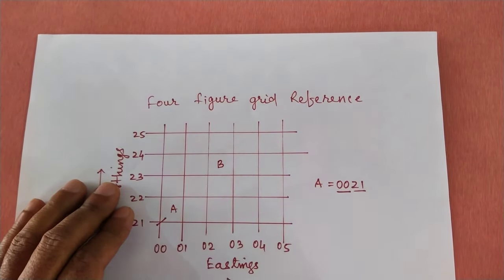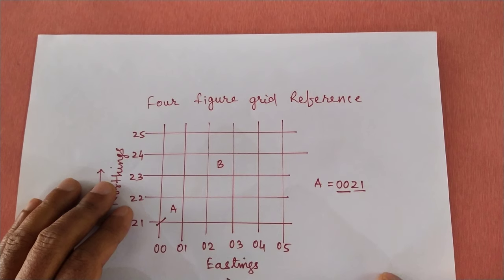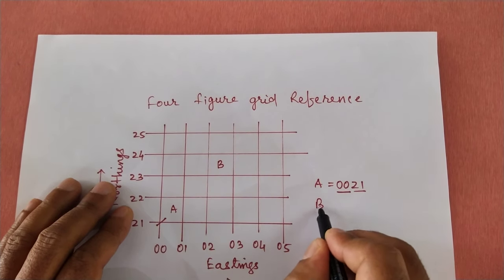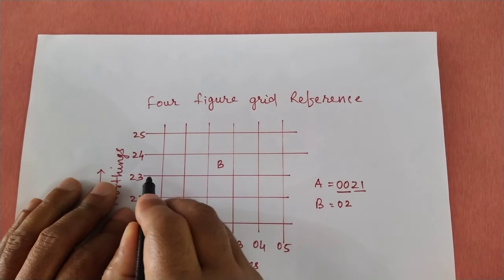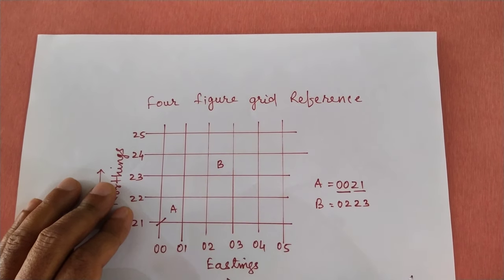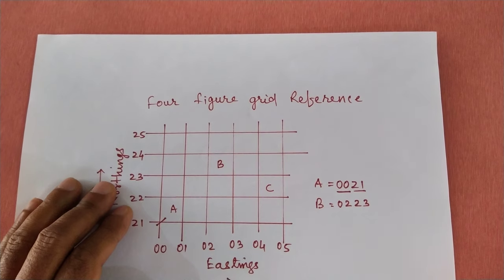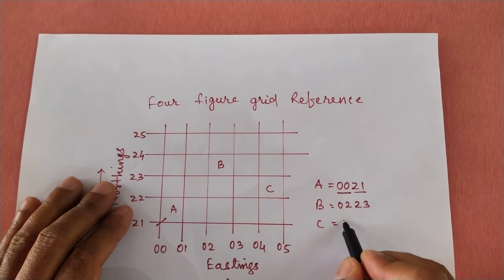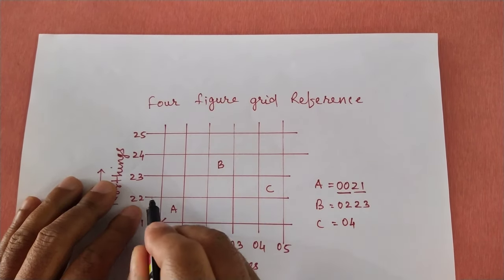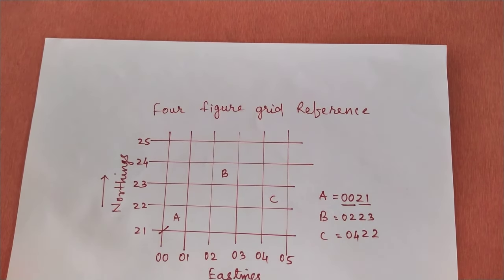B is here in this grid and you are asked to give the four-figure grid reference for the location of B. So B will be: Easting 02 and Northing 23. Let's take another example — C. The four-figure grid reference of C will be Easting 04 and Northing 22.